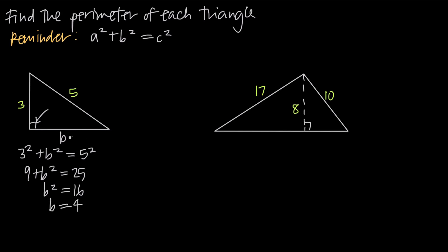So we can say that this side length is equal to four. Then to find the perimeter, we just add the three side lengths together. So we say three plus four plus five, and that's going to be 12 — the perimeter of the triangle.